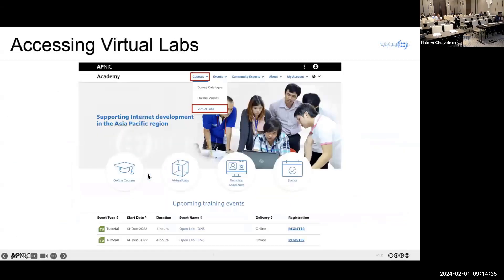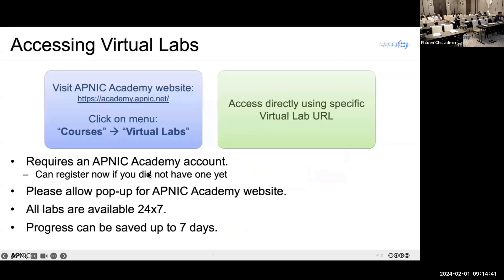In today's training we'll use virtual labs on the APNIC Academy platform. There are two ways to access them: click the Courses menu then Virtual Labs, or use a specific virtual lab URL as provided in the course material. You will need an APNIC Academy account to access the labs. You can register now if you don't have one — registration is straightforward, requiring only basic information and an email address. You do not need to be an APNIC member.